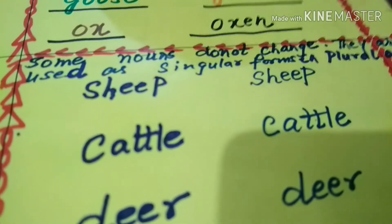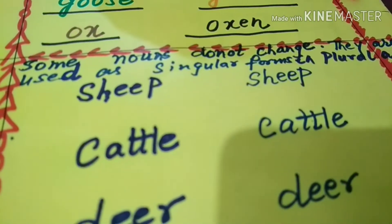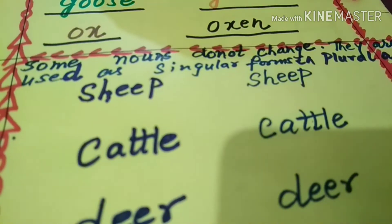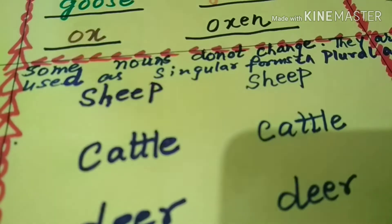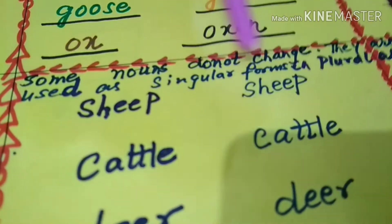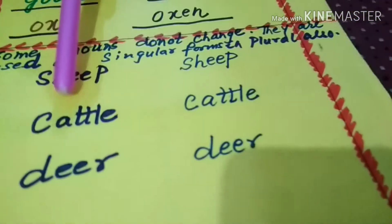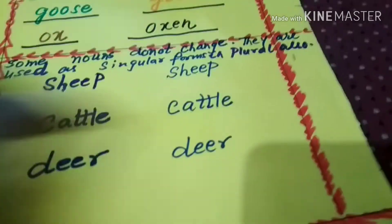They are used in the same singular and plural forms. For example: sheep, sheep. Cattle, cattle. Deer, deer.